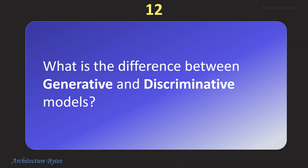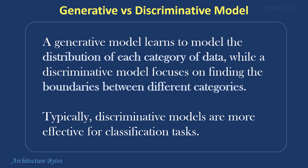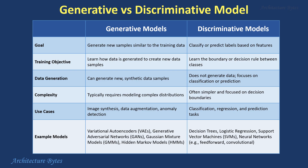What is the difference between generative and discriminative models? A generative model learns to model the distribution of each category of data, while a discriminative model focuses on finding the boundaries between different categories. Discriminative models are typically more effective for classification tasks. An example of a generative model is variational autoencoders, and an example of a discriminative model is a decision tree. A key difference is that generative models can generate new synthetic data samples, while discriminative models do not generate data but focus on classification or prediction.